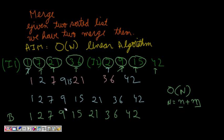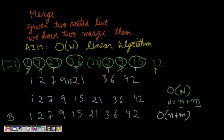This is about merging two arrays. We already ran the code and saw it was working. Its order is O(n + m). Thanks a lot.